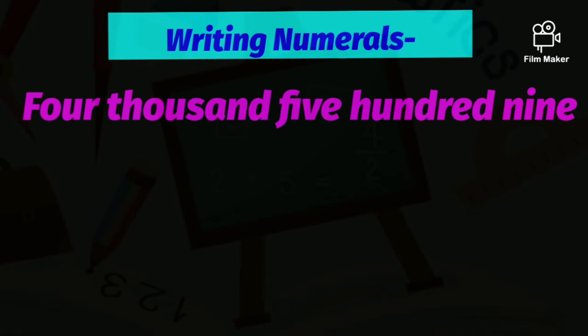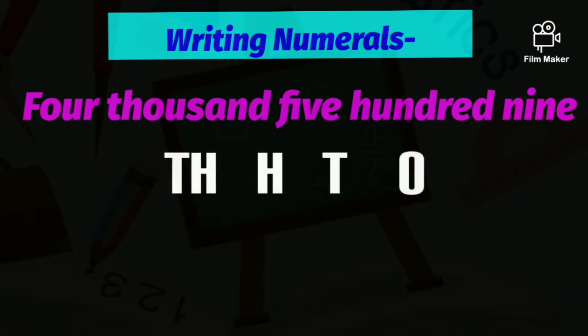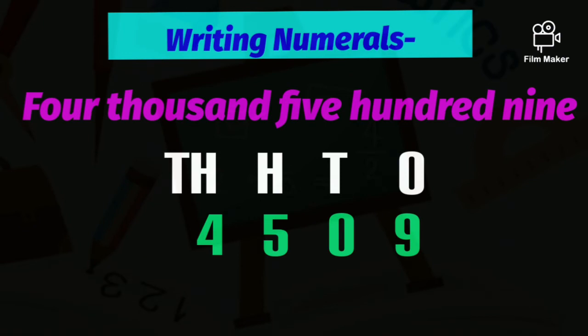The first number name is four thousand five hundred nine. To write the numeral, we identify the highest place — here it is thousands. We write all the places: ones, tens, hundreds, thousands. Four thousand goes in the thousands place, five hundred goes in the hundreds place, zero in the tens place, and nine in the ones place. So the numeral is 4509.